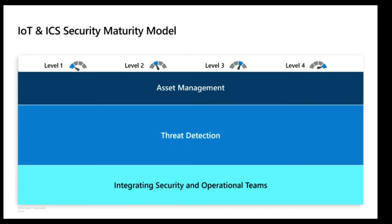How can we measure how secure our organization is? Organization maturity can be broken down into three categories: asset discovery and management — knowing what is on the networks and what might pose a risk; continuous monitoring for threats on the networks, which is a day-to-day effort; as well as integrating both by technology and process the security and operational teams to work together, creating effective collaboration.